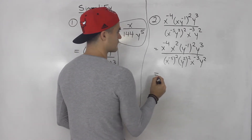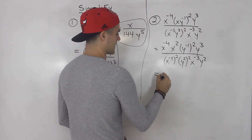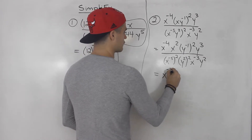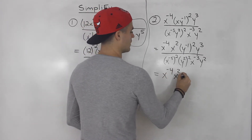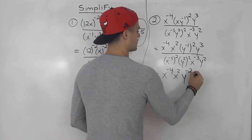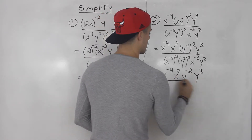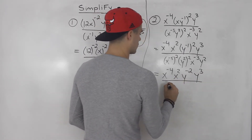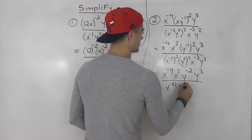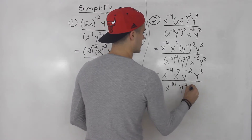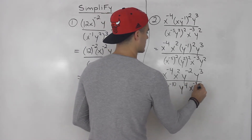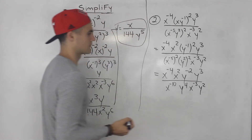So from here we have x to the negative four, x squared, y to the negative two, y to the three — all over x to the negative ten, y to the four, x to the negative three, and y squared.